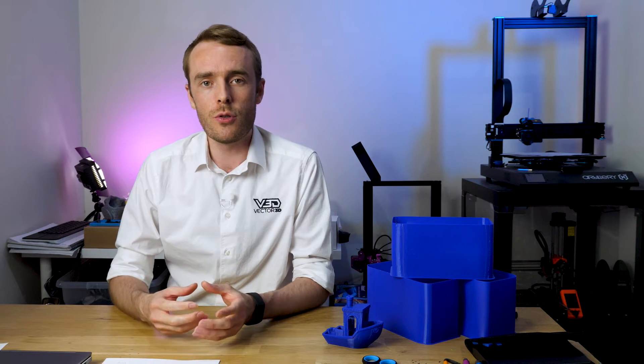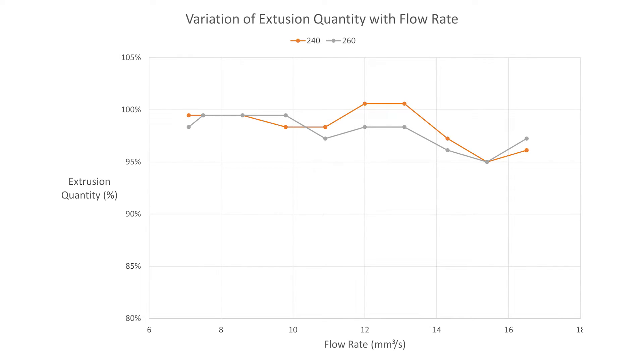Now lastly, let's move on to the weight measurements. Firstly, if we look at just 240c and 260c tests, across the full range their changes seem to always be similar, particularly this plateau peak at 12 to 13 millimeters cubed per second. It seems like extrusion quantity doesn't just decline with flow rate, but rather there are optimal areas for flow rate within this range.